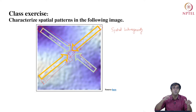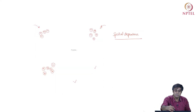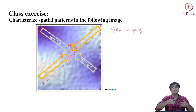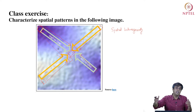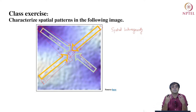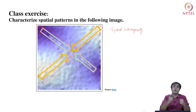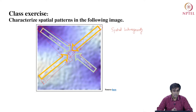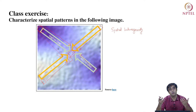In general, spatial dependence occurs at a smaller scale than spatial heterogeneity. Spatial heterogeneity asks us to traverse a larger spatial region, while spatial dependence involves clusters — things happening in localities. This is how we can characterize any given image using the tools of spatial statistics: spatial heterogeneity and spatial dependence.